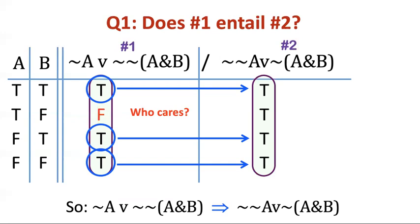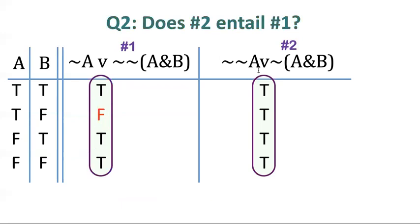Now, we can do another problem here. I want you to assess this one. Use the same truth table. Does number two entail number one? So I want to know about going the other direction. If this is the premise and number one is the conclusion, is that argument valid or not? Pause your videos and see if you can assess that one. You don't even have to do any more computations. Last chance to pause your videos.